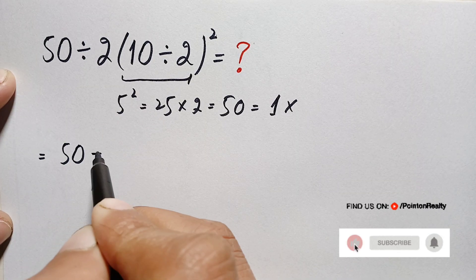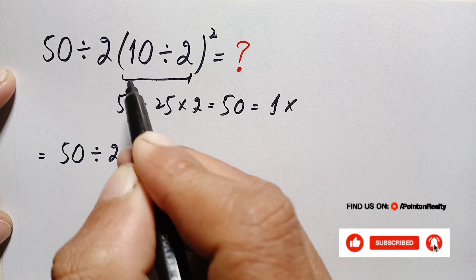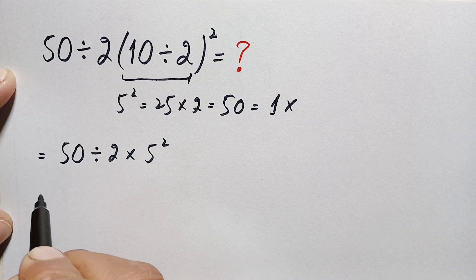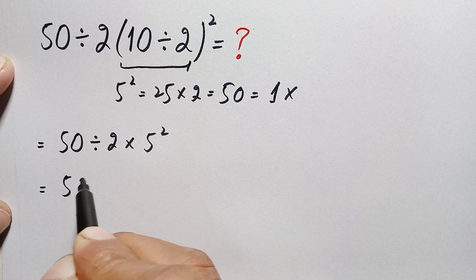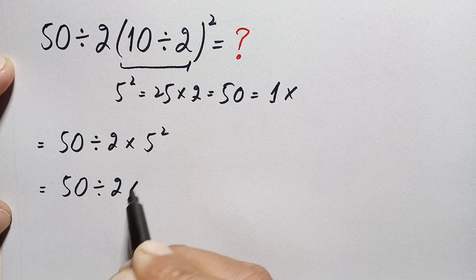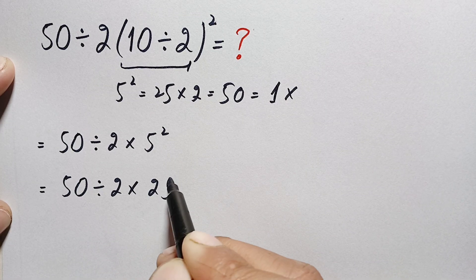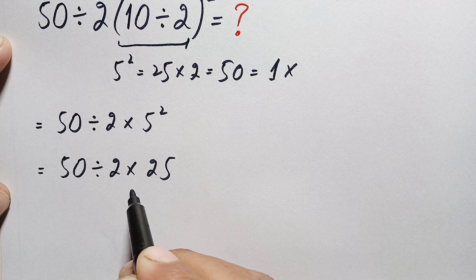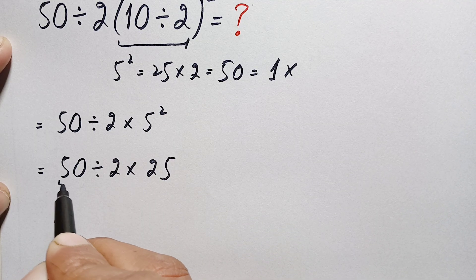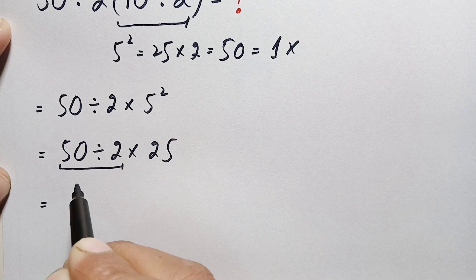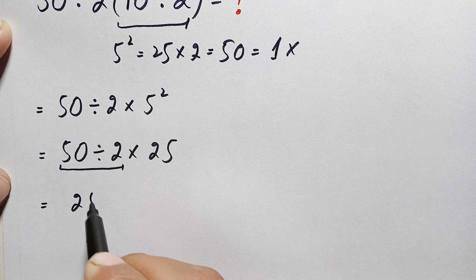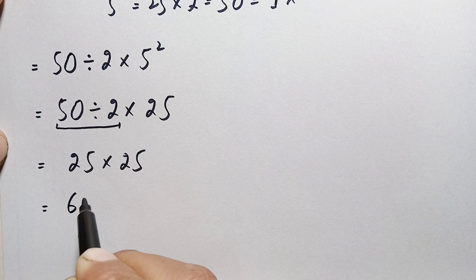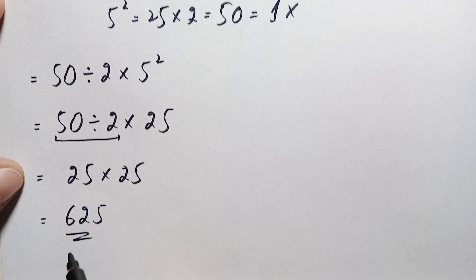So this problem becomes 50 divided by 2 times 5 squared, since 10 divided by 2 is 5. Next, we simplify the exponent: 5 squared is 25, giving 50 divided by 2 times 25. Now, division and multiplication have equal priority from left to right, so we do division first: 50 divided by 2 is 25. Then 25 times 25 gives us 625.